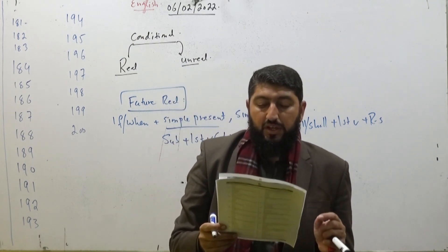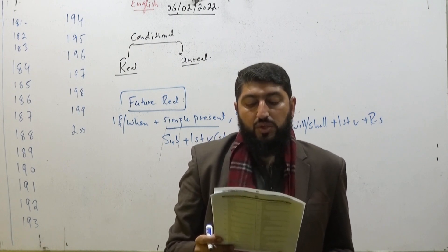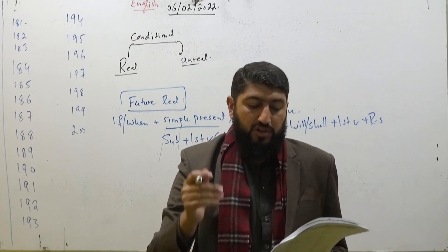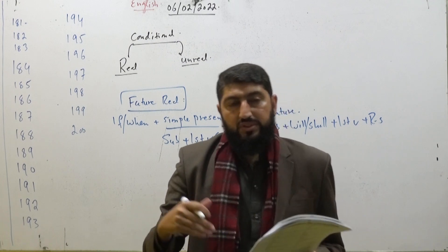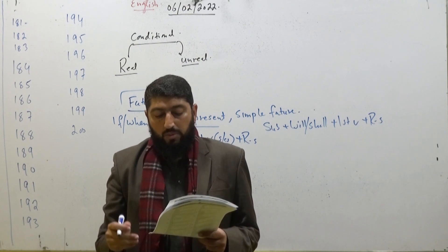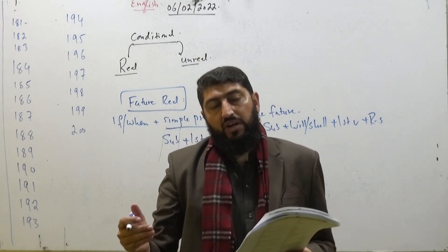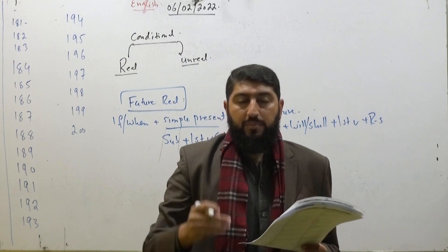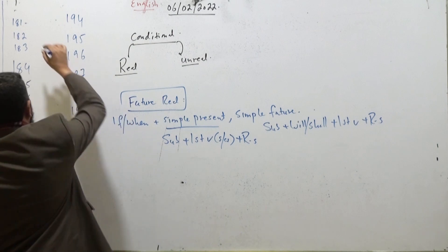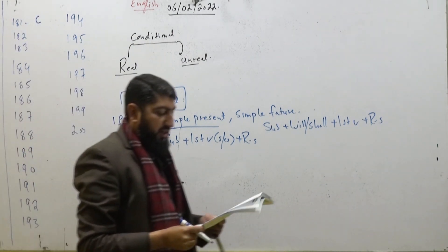Here it will be an absolute structure. You will succeed automatically. Option number B uses 'would' instead of 'will' — 'would' is used incorrectly here. You will succeed — option number C is the correct one.